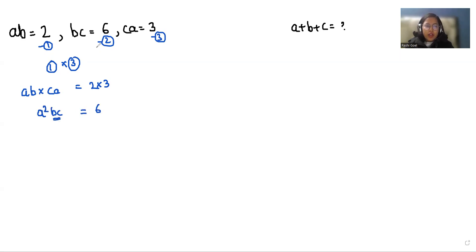So in place of BC, we can put 6 from equation number second. So A squared times 6 equals 6. So the value of A squared is 1.